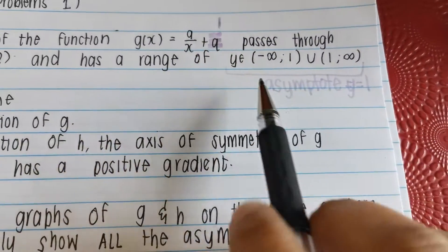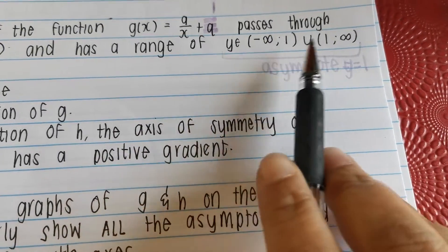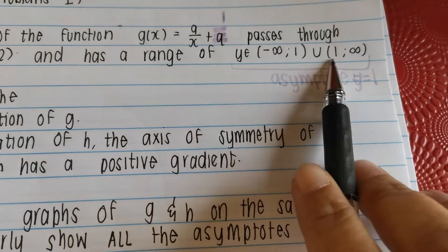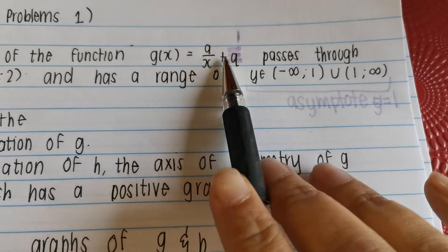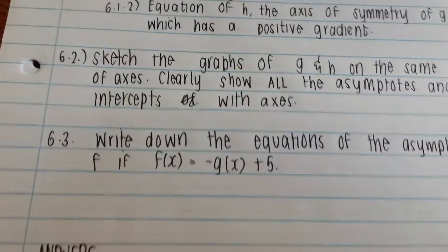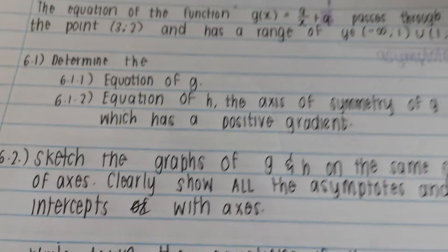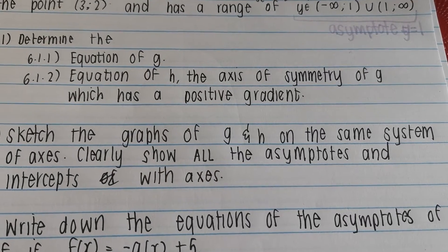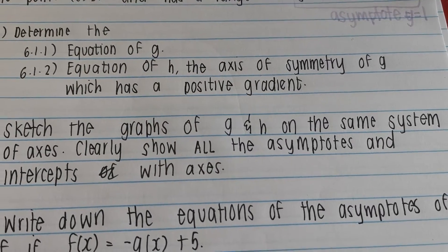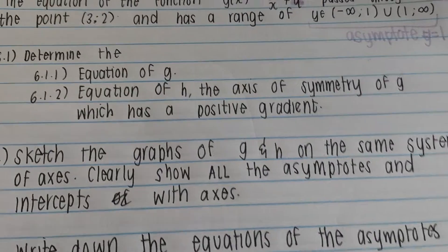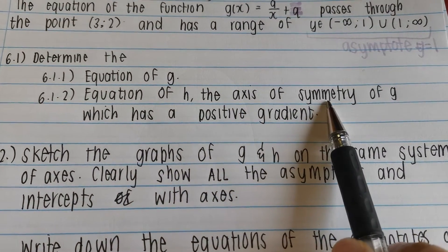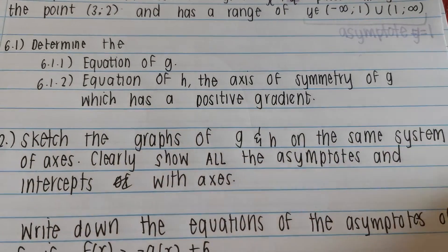Required us to know that our theory, that our range cannot pass through this y value of 1 because it's the asymptote. Next question. 6.1.2 says, determine the equation of h. So this is a new graph. And it's telling us that this new graph is actually the axis of symmetry, which has a positive gradient.